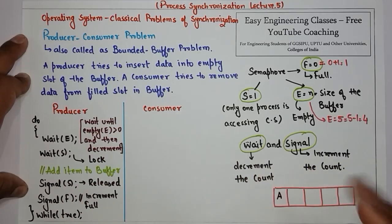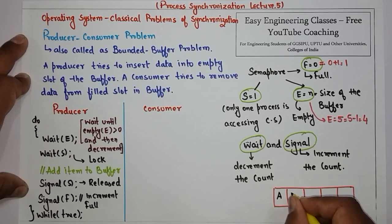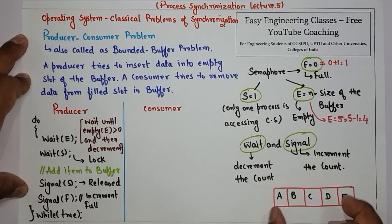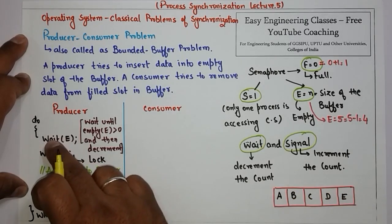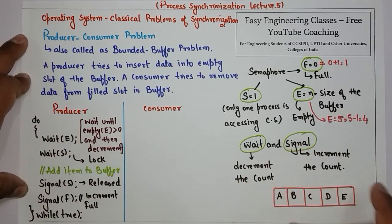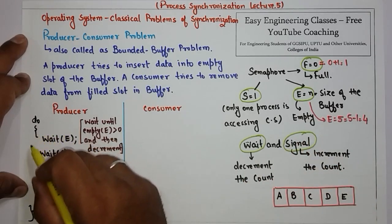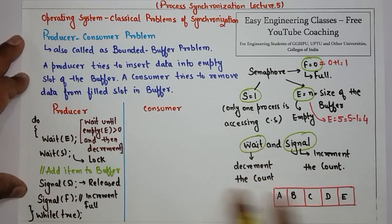Once all the values are filled — for example A, B, C, D, and E — at that point empty is 0, so the producer cannot add more items in the buffer and it will wait in this entry section. That is the producer.